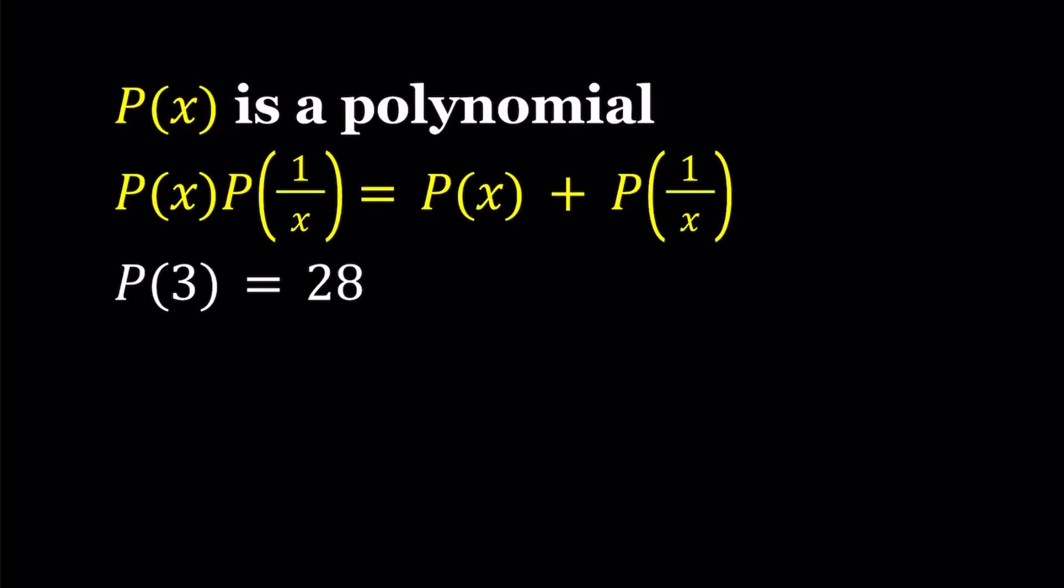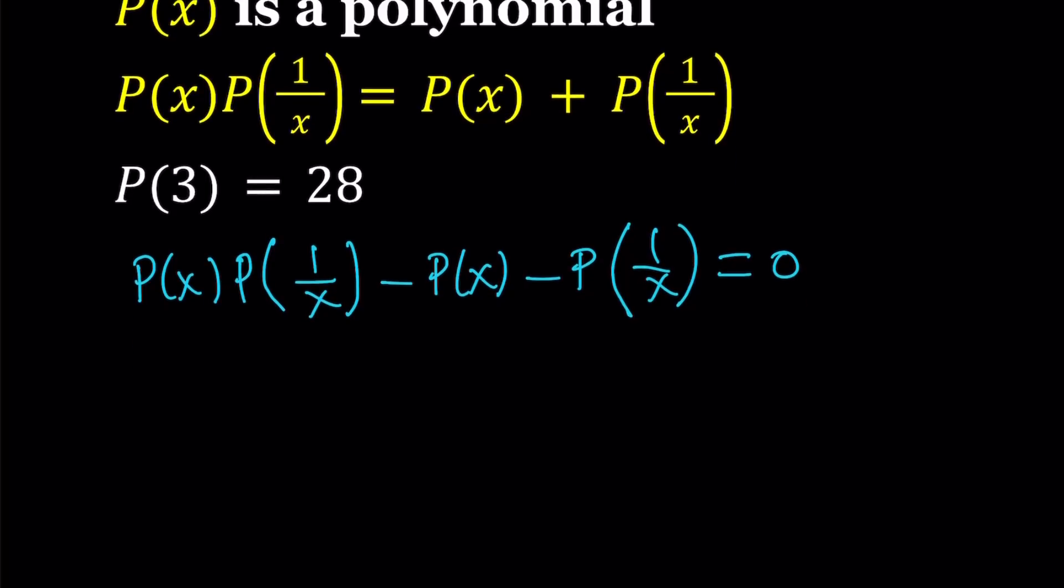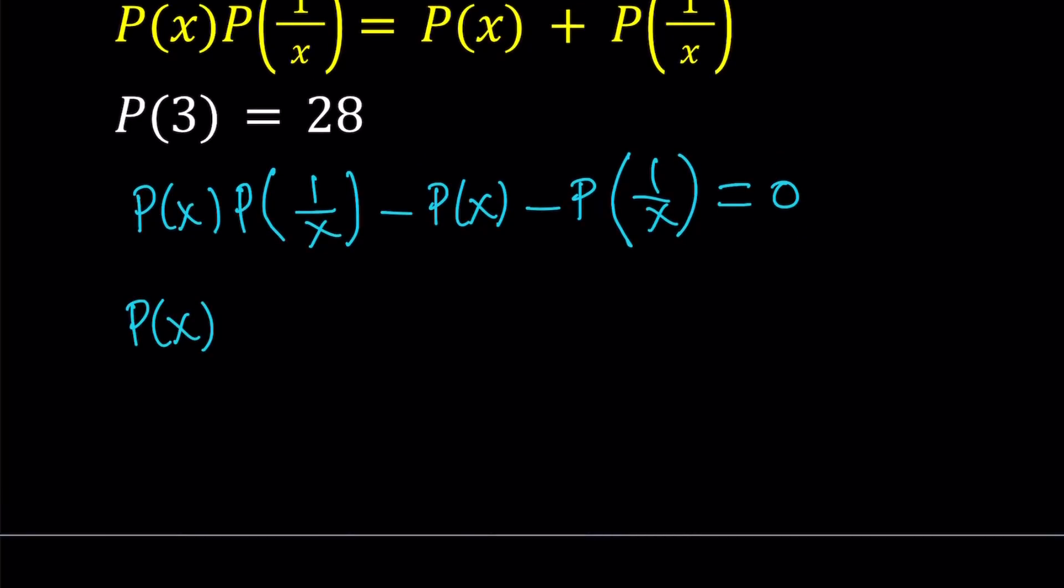So we're going to try to find this polynomial that satisfies this equation with the given initial condition. Let's go ahead and manipulate this equation a little bit to make it factorable. So I want to subtract everything on the right-hand side from the left-hand side. Notice that the first two terms here have a common factor. So if you take out P of X, you're going to get P of 1 over X minus 1, and then negative P of 1 over X. So in order to make this expression factorable, we do need a 1 that is being subtracted from P of 1 over X.